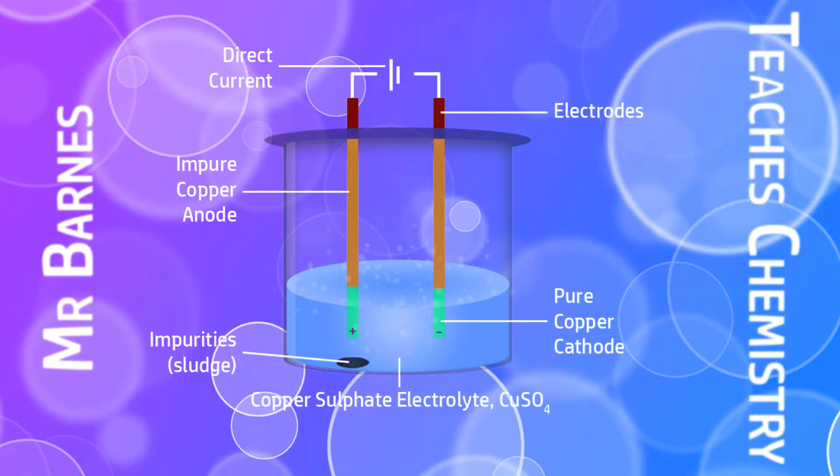As you can see here we have two electrodes, one of them being a pure copper cathode and one of them being an impure copper anode. What happens is we then use a copper sulfate electrolyte so there's copper ions all the way throughout, and the copper from the impure copper anode will move into the solution and then move over to the pure copper cathode.